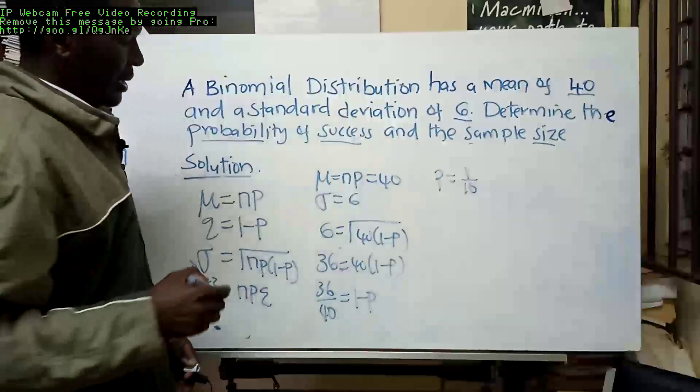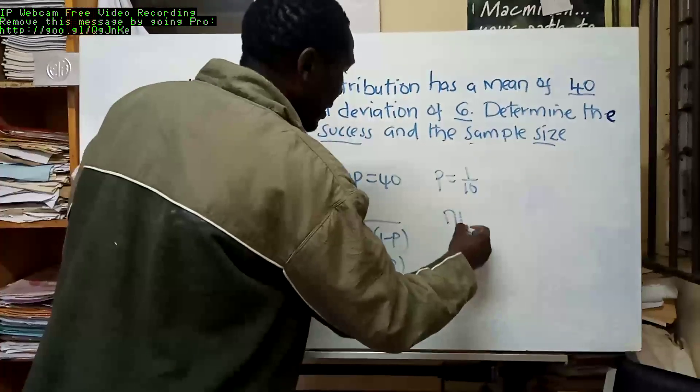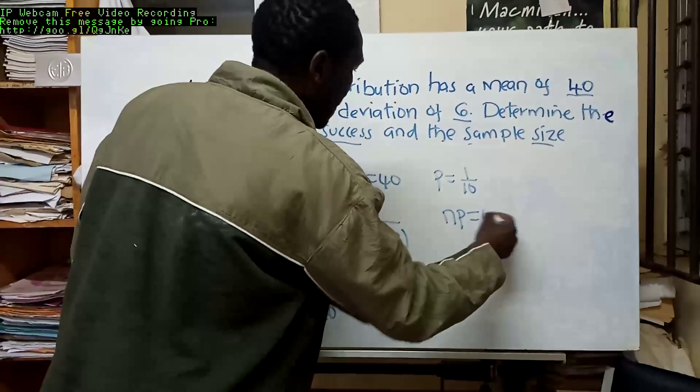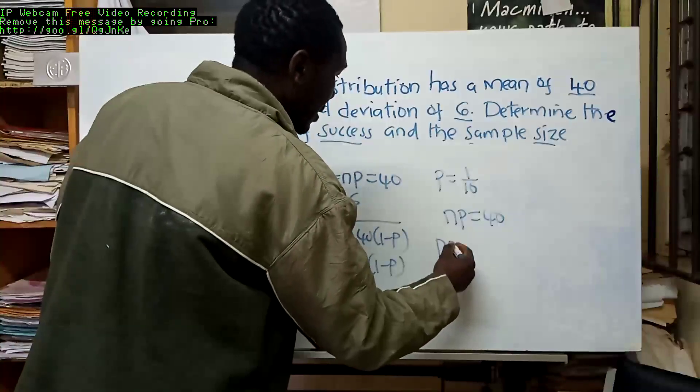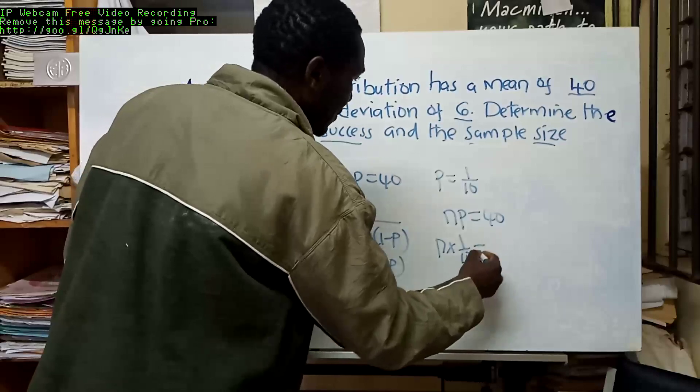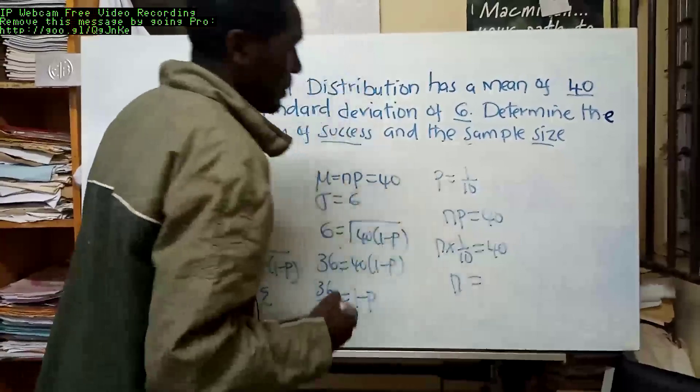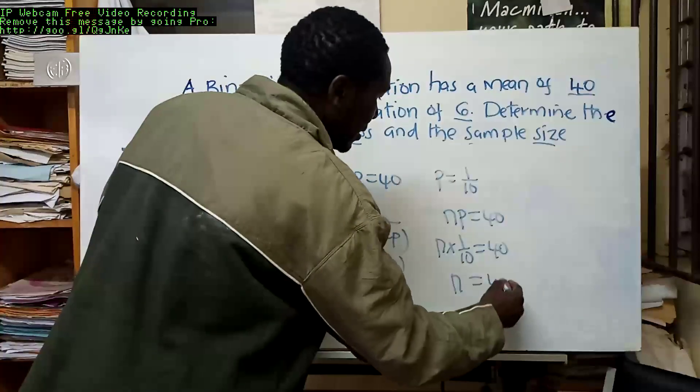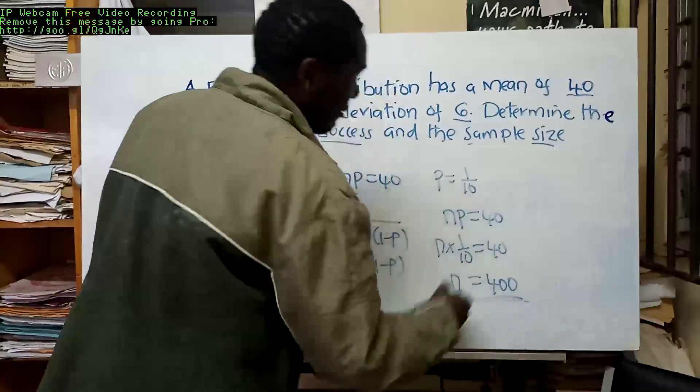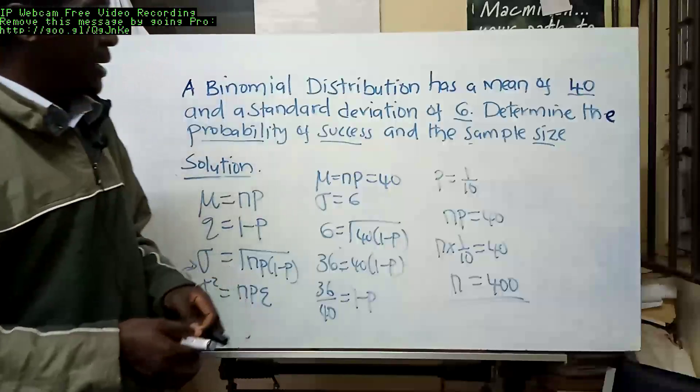If you rearrange that and simplify, we know that n times p equals 40. We don't know n, but we know p, which is 1 out of 10, and that equals 40. Therefore, n is equal to, multiply both sides by 10, you get 400.